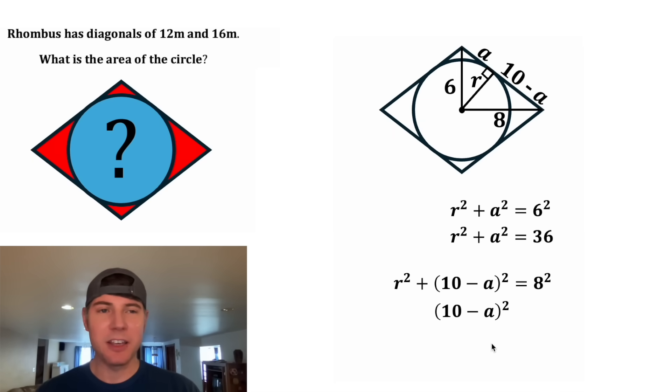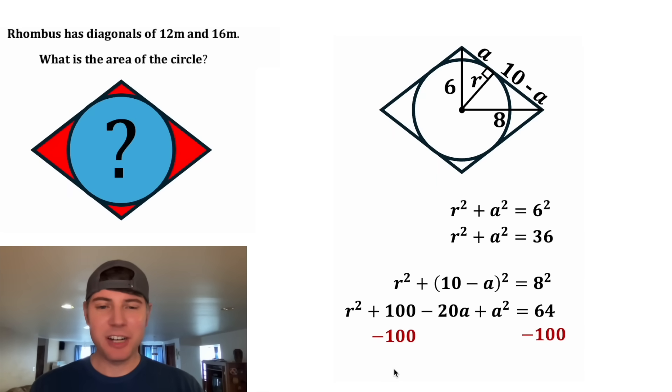For this bottom one, let's look at the quantity 10 minus A squared. It means the same thing as 10 minus A times 10 minus A. And after we multiply this out, it'll give us 100 minus 20A plus A squared. And then we can bring down the R squared, and this 8 squared is equal to 64. Next, we can subtract 100 from both sides of the equation. The left-hand side will have R squared minus 20A plus A squared. And then on the right-hand side, 64 minus 100 is equal to negative 36.